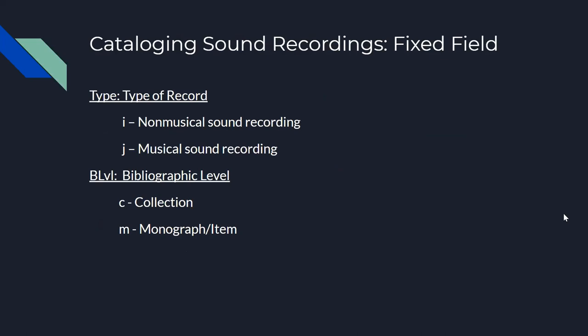Starting at the top of the record, the fixed fields for sound recordings should have the type as either an I for non-musical sound recordings or a J for musical sound recordings. The bibliographic level should be collection or monograph/item, depending on what you're cataloging. Other elements such as descriptive cataloging form, encoding level, date, etc. will be filled out the same way as other formats.